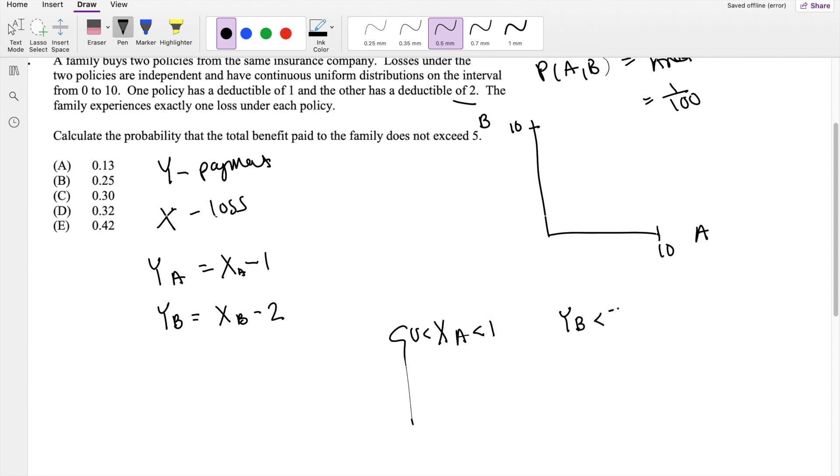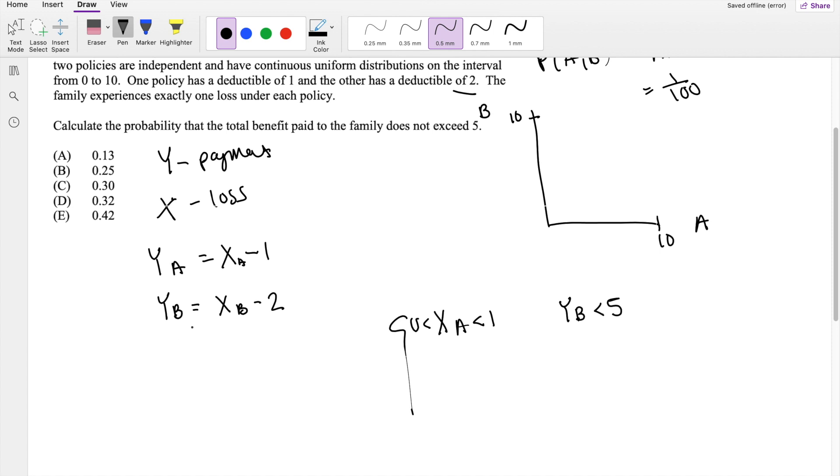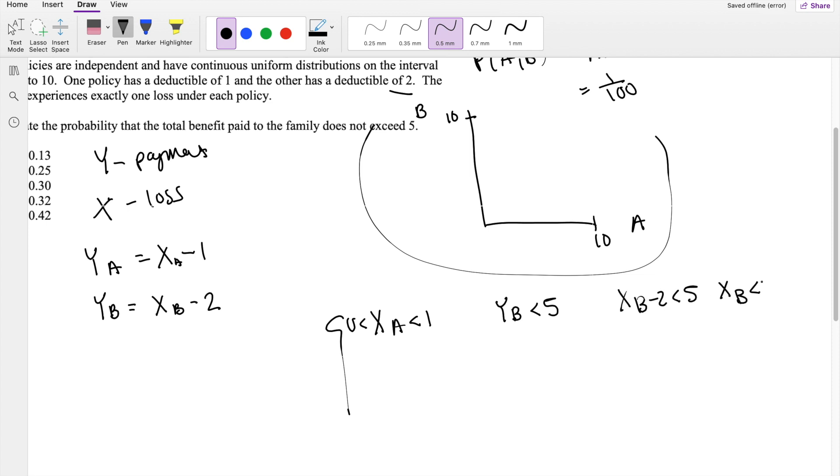the biggest it could be, Y_B has to be less than 5. But because Y_B we know is equal to X_B minus 2, and this graph is in terms of X, so we know that if we plug in Y_B in here, you get X_B minus 2 is less than 5. So we know that X_B must be less than 7.